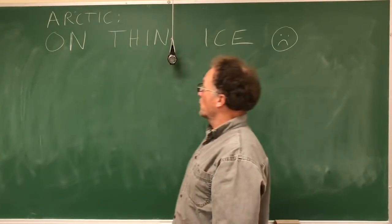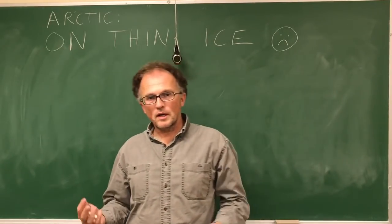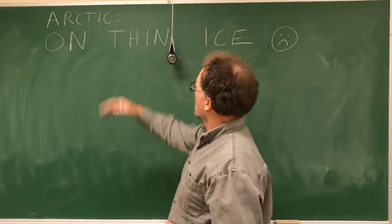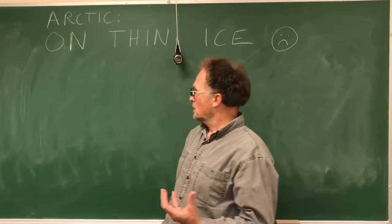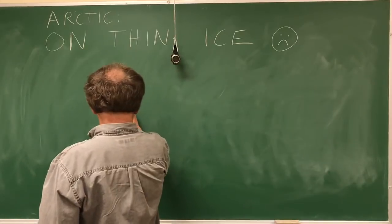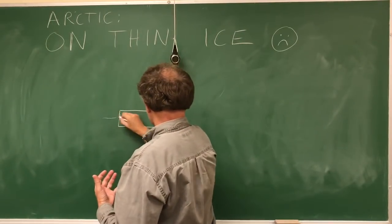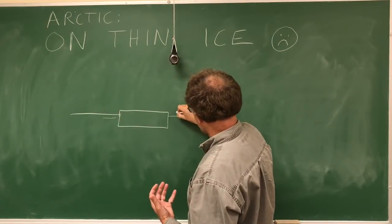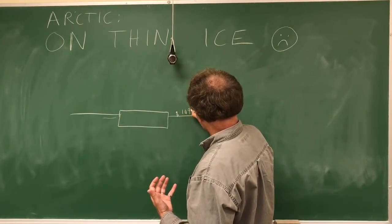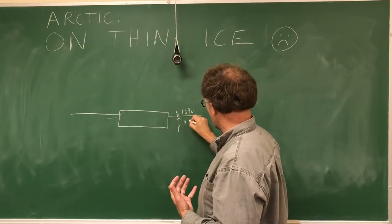Hello, I'm Paul Beckwith. This is a brainstorming session. I just did a video showing how the Arctic is on thin ice. Basically, we've got first-year ice maybe two or three feet thick floating in the ocean. About 10% of the ice is above the surface of the water, 90% is below the surface.